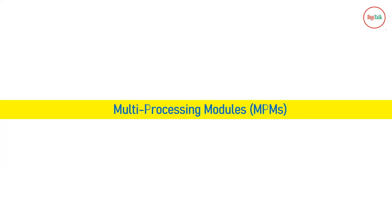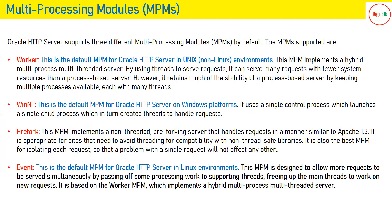The main important concept of a web server is Multi-Processing Modules, which we call MPM. The web server accepts multiple simultaneous requests from clients and then creates a parent process, which spawns many threads. Each thread accepts and processes the client request. The concept of MPM is very important when we talk about performance tuning of our server.